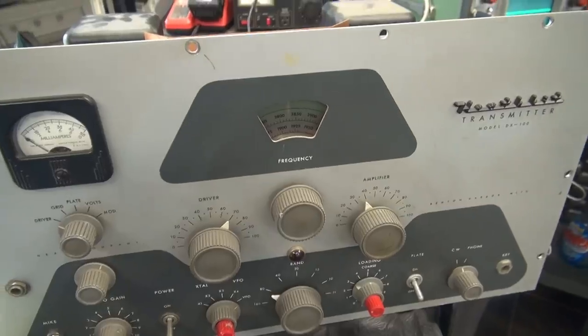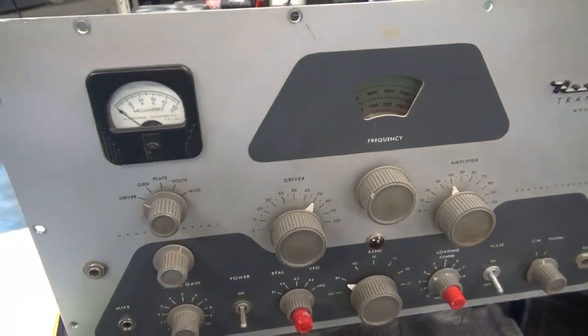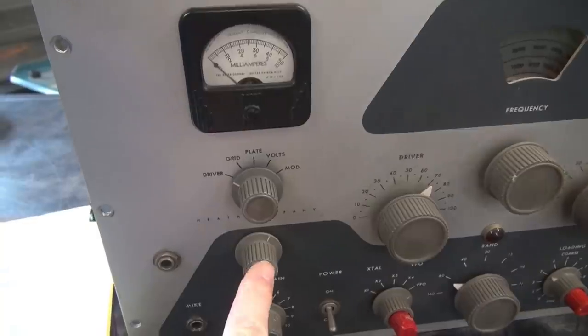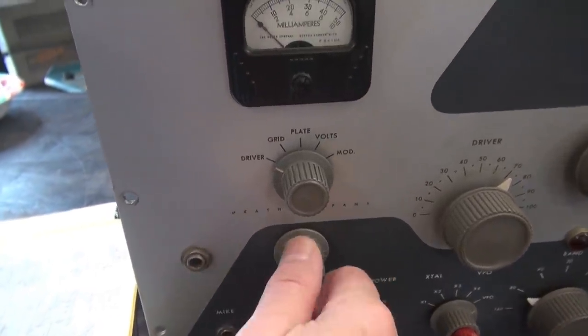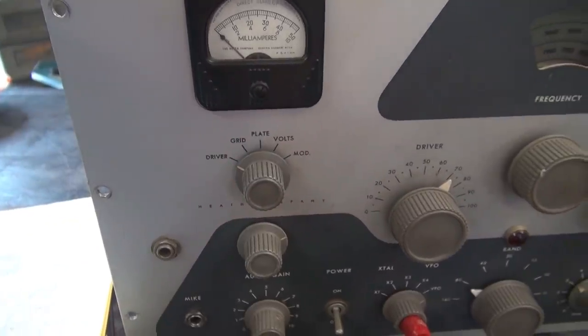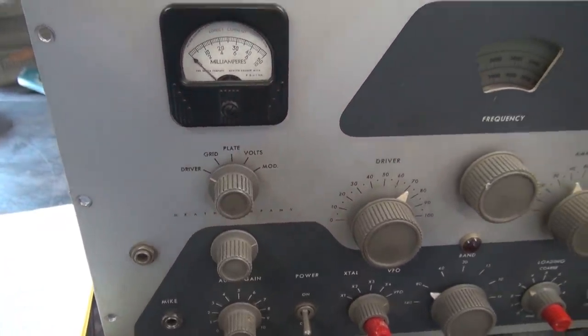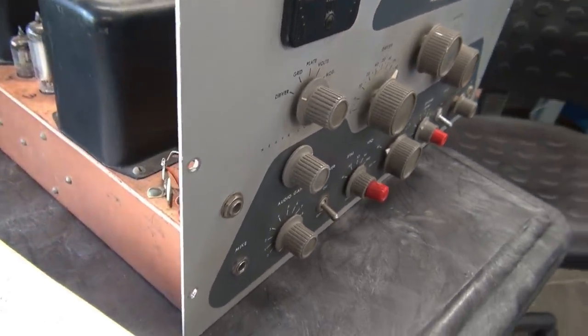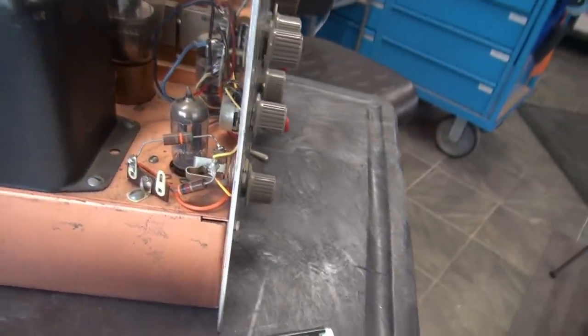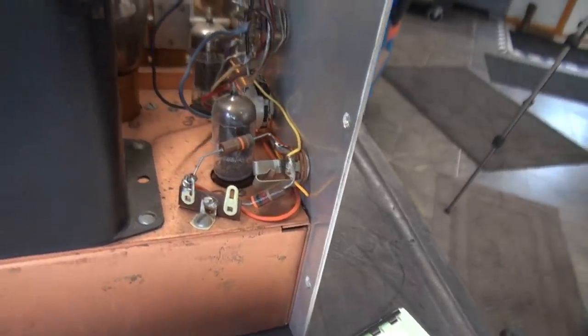So I featured this transmitter in an earlier video and pointed out that it has a modification here. There's an added jack and an added pot. I got on some of the nets and I asked around and some guys said that may be an FSK keying modification for the transmitter. It used to be a popular thing.